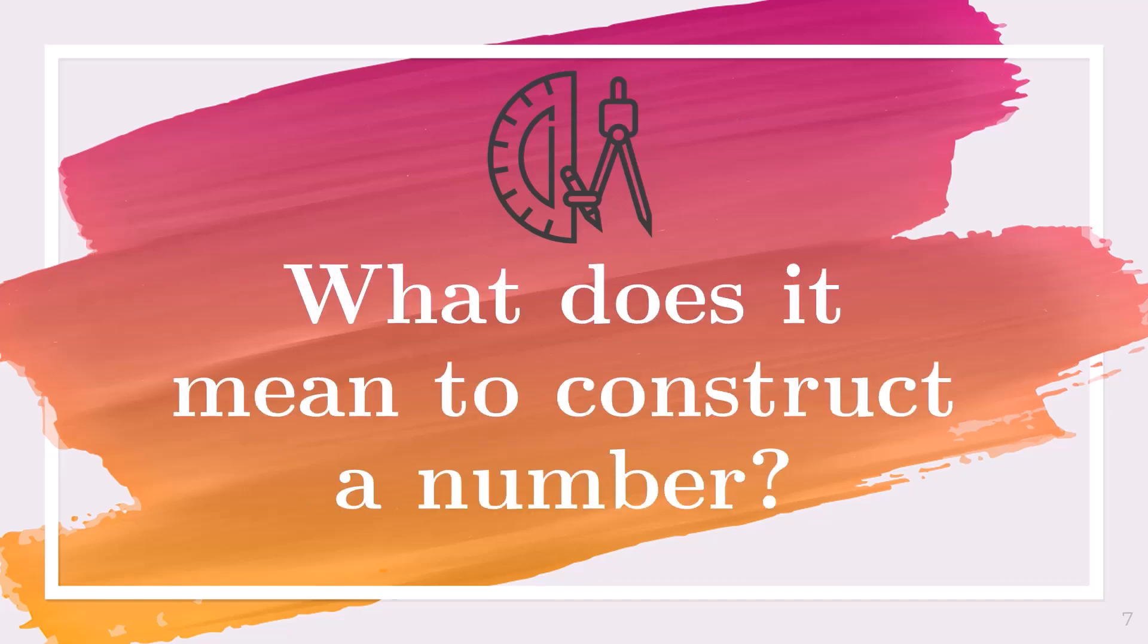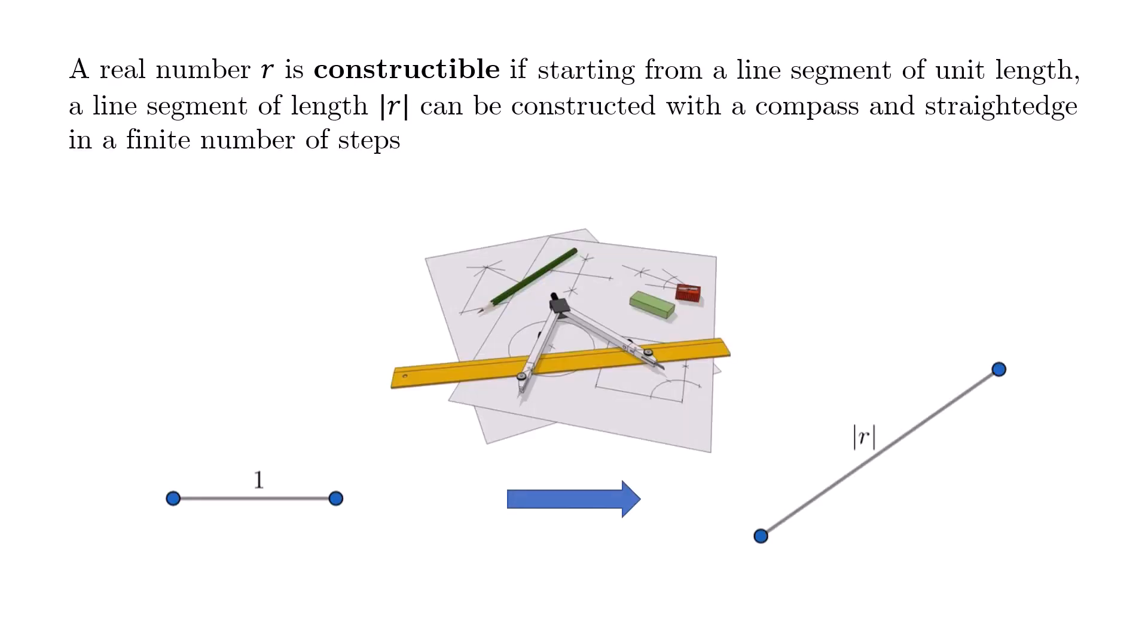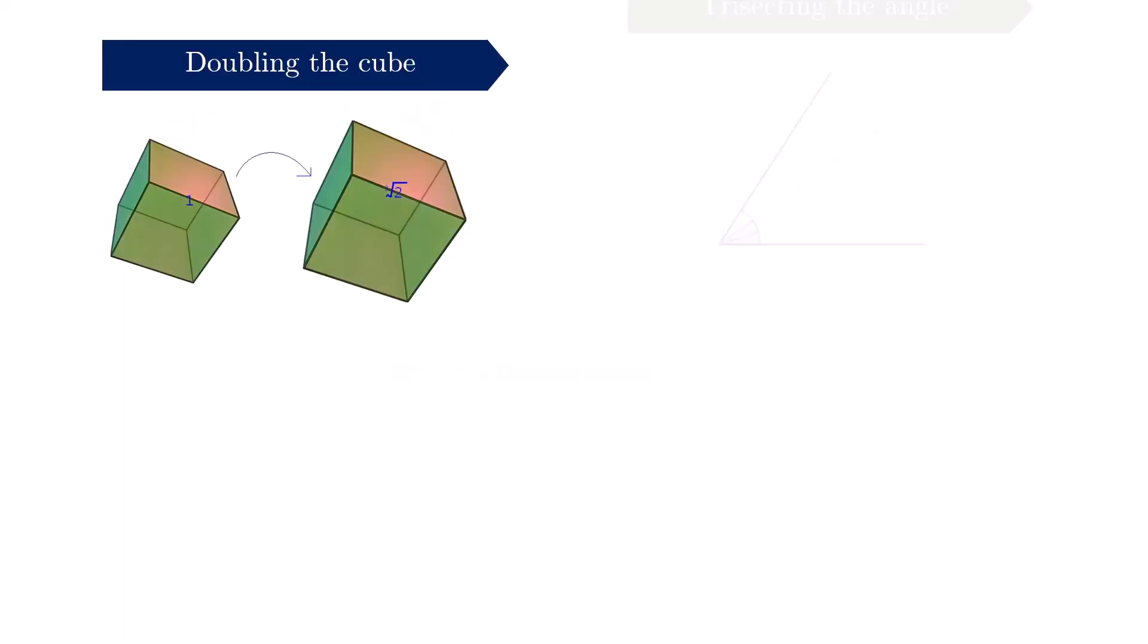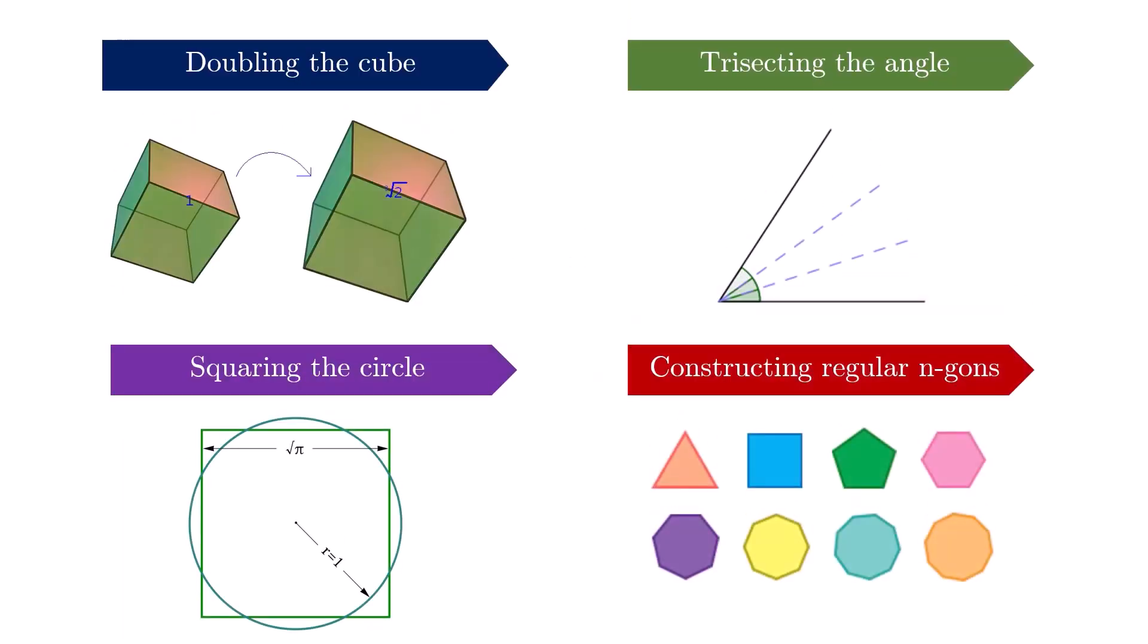What does it mean to construct a number? A real number r is constructible if starting from a line segment of unit length, a line segment of length r can be constructed with a compass and straight edge in a finite number of steps.